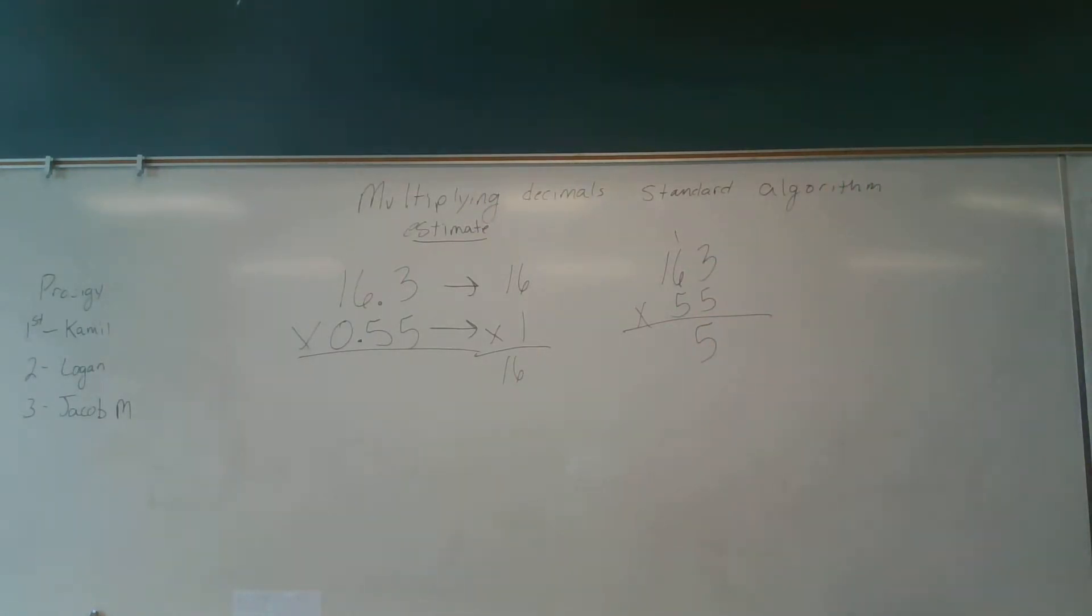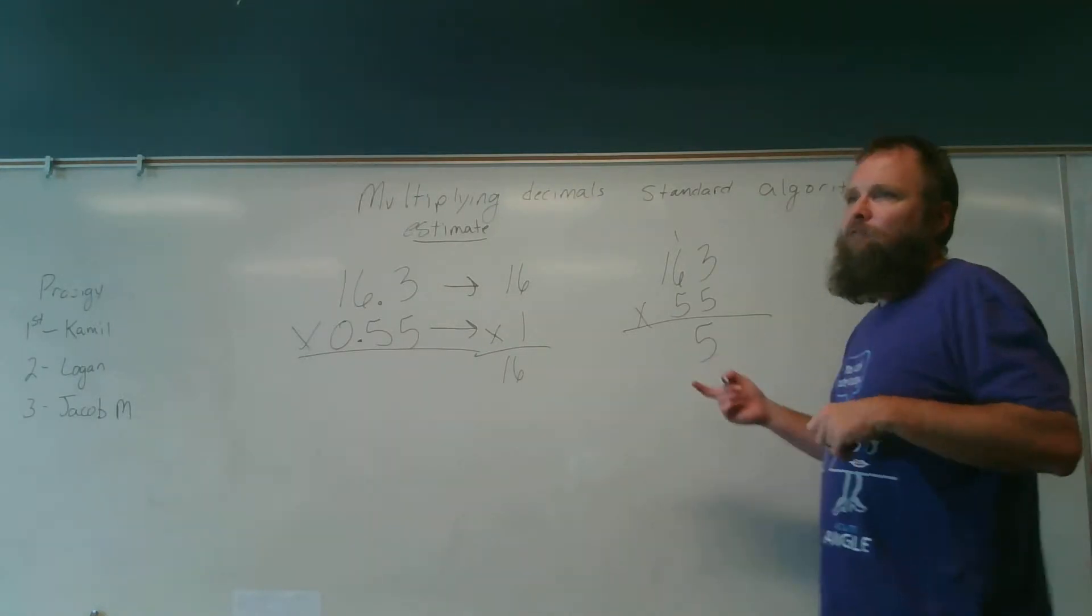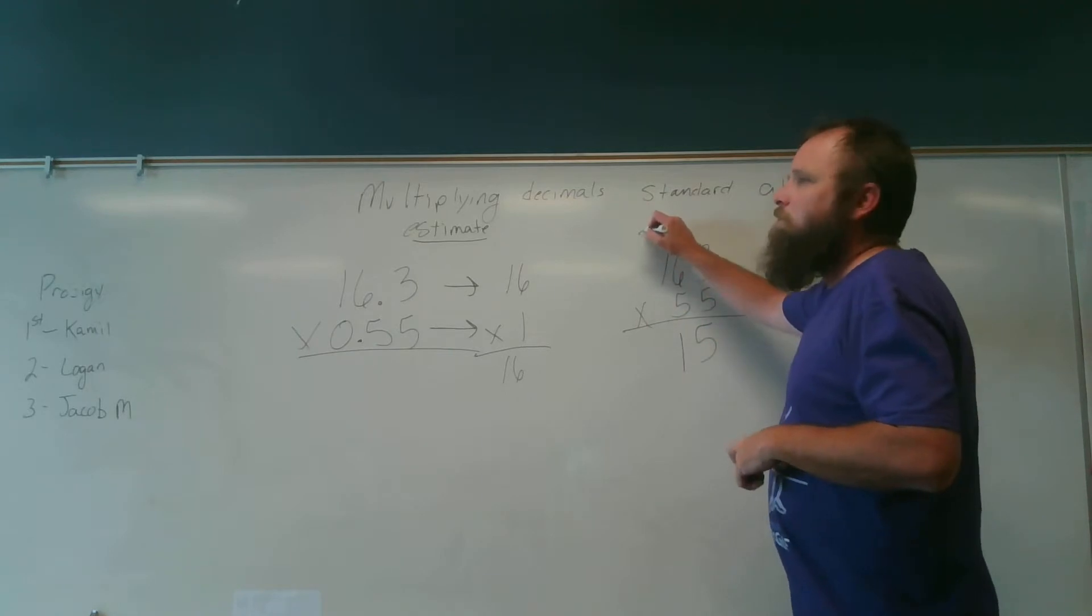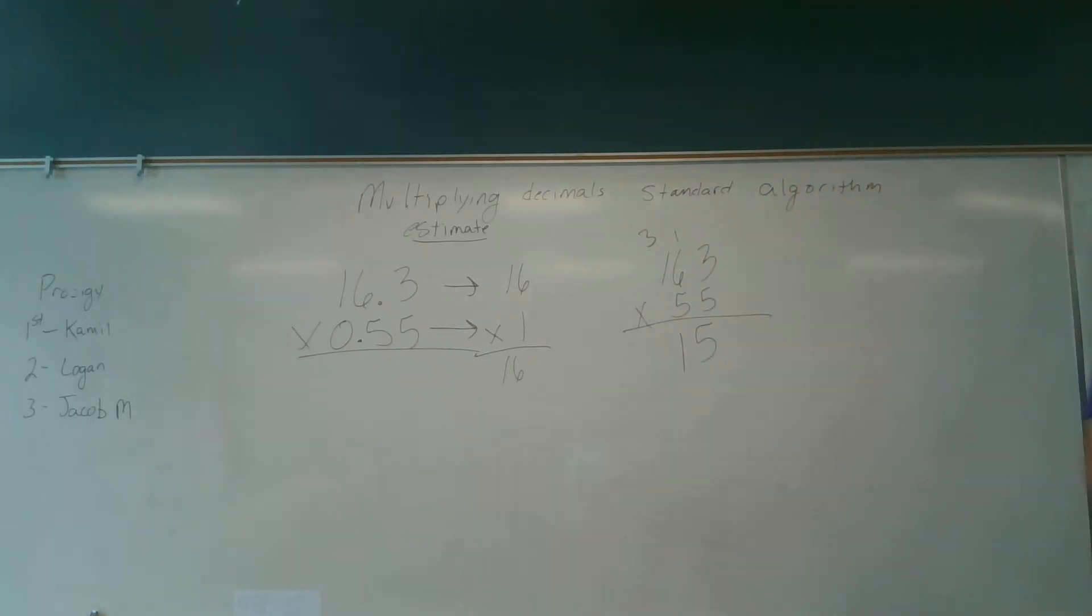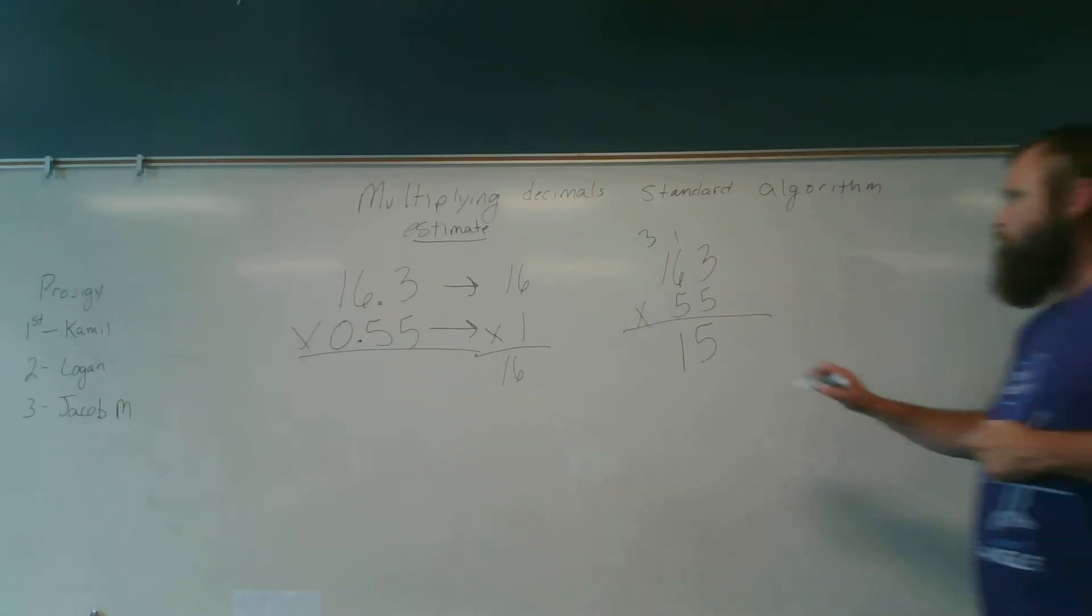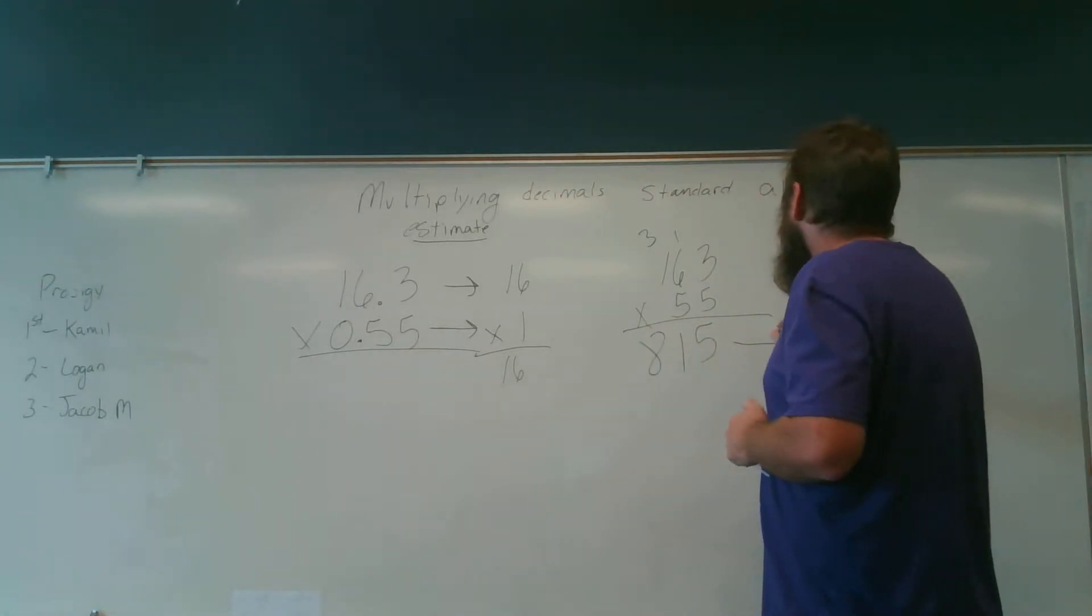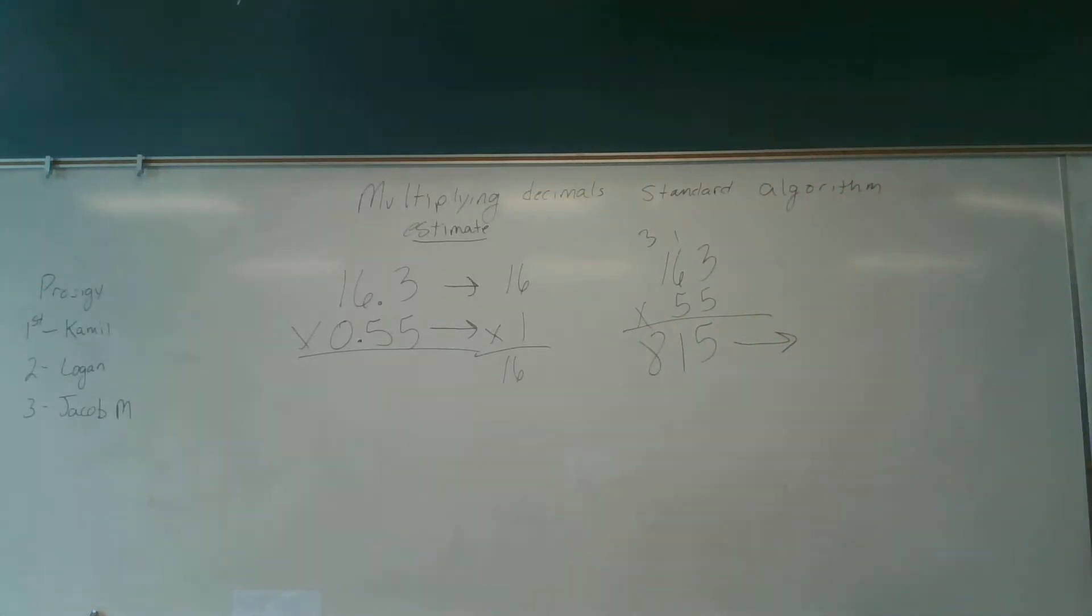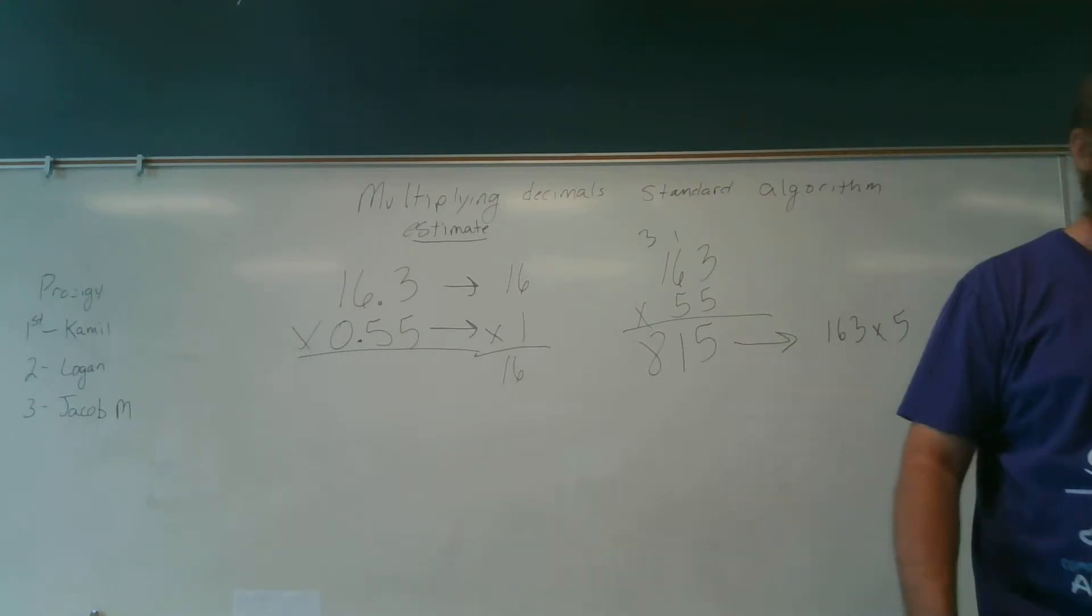Macy, what's 5 times 6? 30 plus the extra 10, 31. Means I have 31 tens, or 1 ten and 3 hundreds. Macy, what's 5 times 1 plus 3? 8. Macy, what did I multiply to get 815? 163 times 5. That is what I multiplied to get 815. Thank you Macy, you're a wonderful young lady.